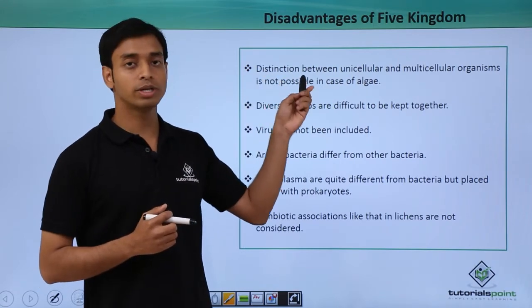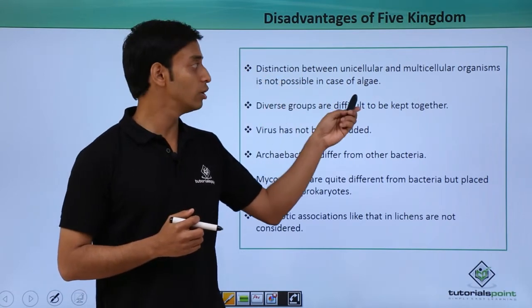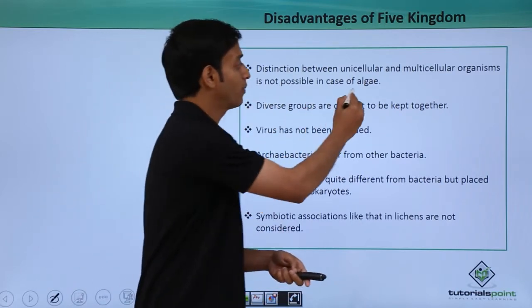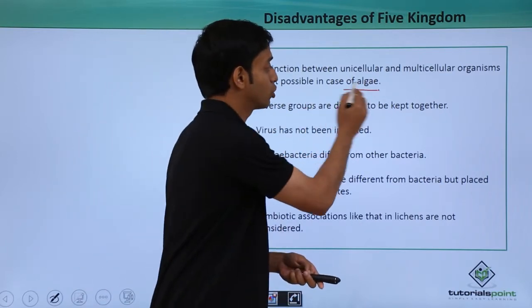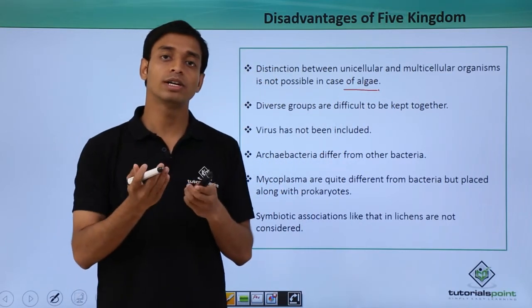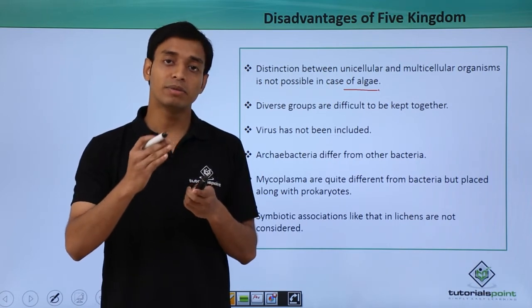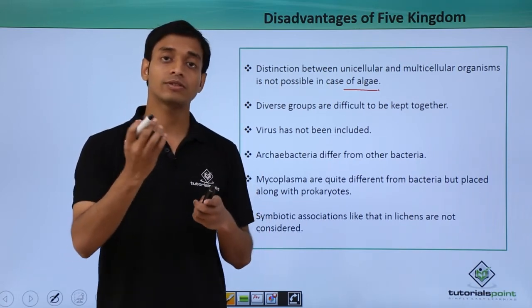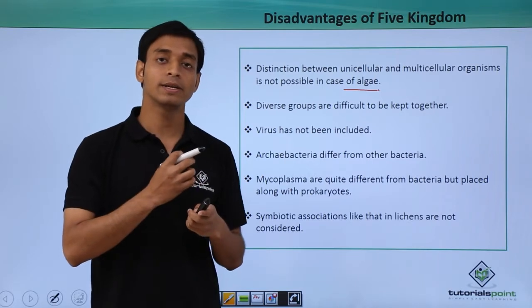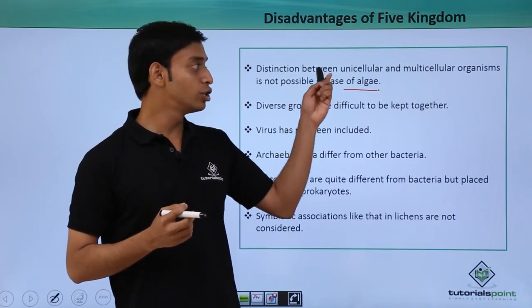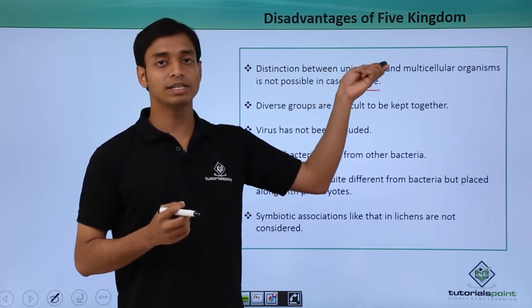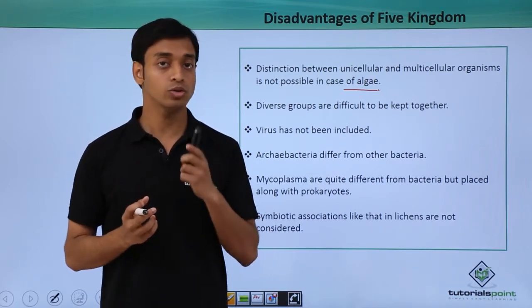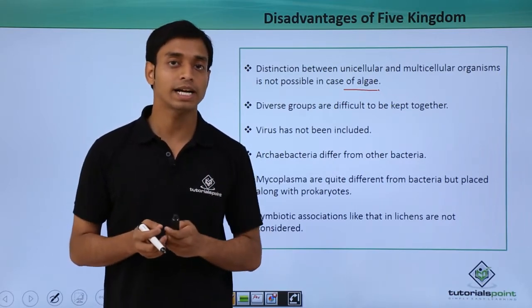The first disadvantage is that the distinction between unicellular and multicellular organisms is not possible in the case of algae. We have separated unicellular eukaryotes and multicellular eukaryotes in protesta and other organisms, but unicellular and multicellular algae have not been considered into separate groups. This is a disadvantage.